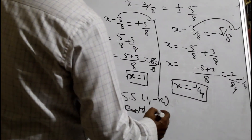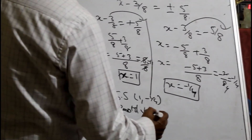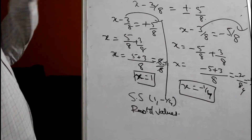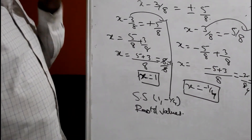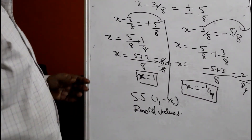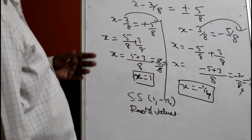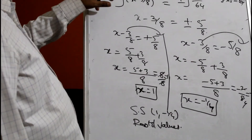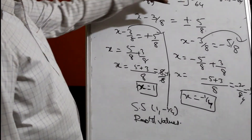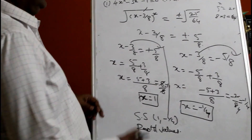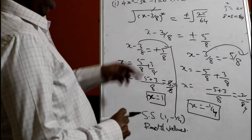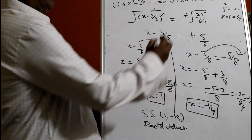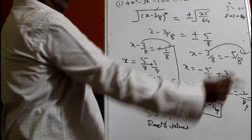So the solution set is {1, minus 1 by 4}. These are also called roots or values. These are the three methods we covered. There is also a graphical method used with a graph sheet. We will try one more sum where a number comes in front.